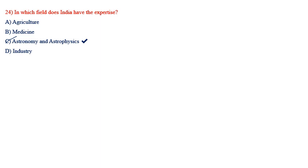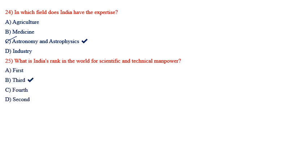What is India's rank in the world for scientific and technical manpower? Options: first, third, fourth, and second. The correct option is B — third.